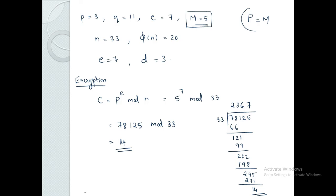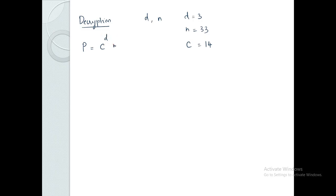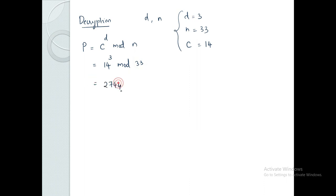Now we perform decryption. Decryption uses the private key values D equals 3 and N equals 33. The decryption equation gives the plaintext P equals C raised to D mod N. Substituting values: P equals 14 raised to 3 mod 33. 14 to the power 3 equals 2744.